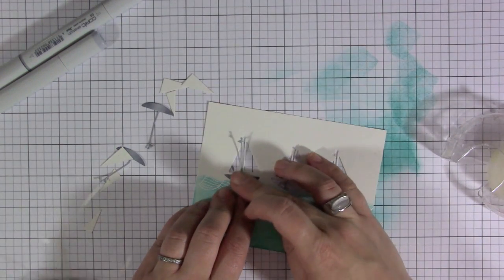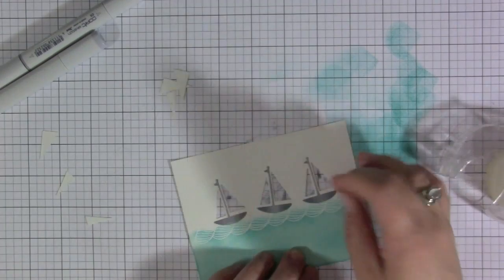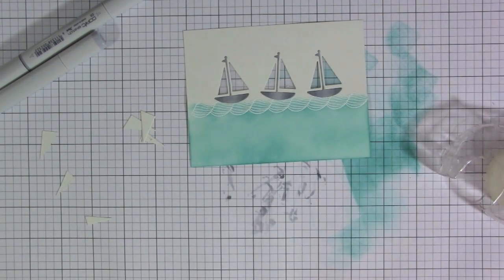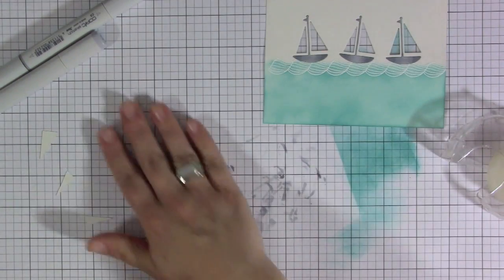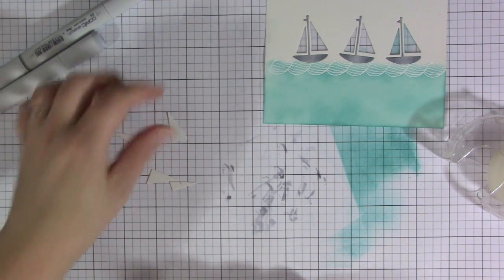When you flip it over, those die cuts will just fit right in there and they'll stick to that tape. It's just an easy way to put adhesive on the back and know that it's fully covered so all those little die cut pieces are going to stick in there without any problem. You can see there I went ahead and put all the bottom pieces in.